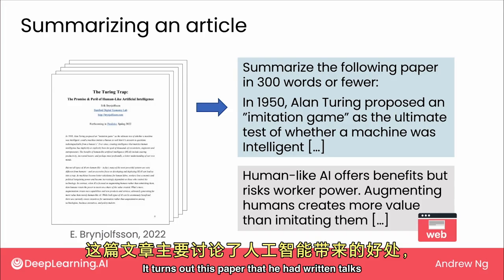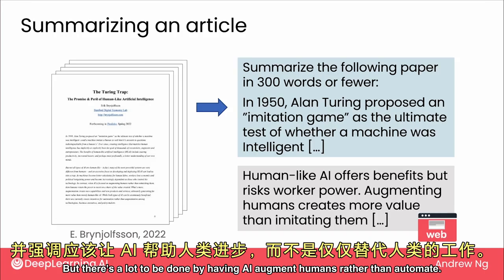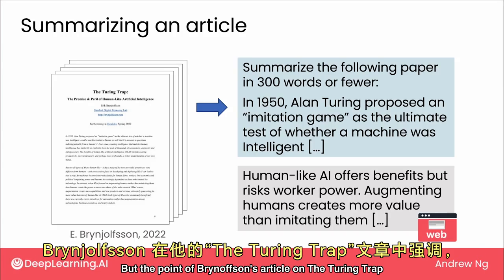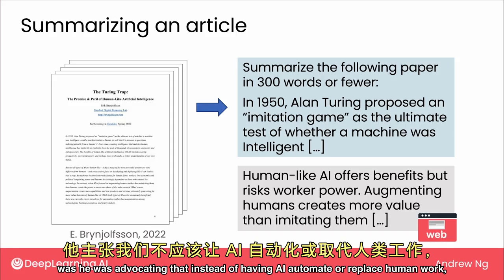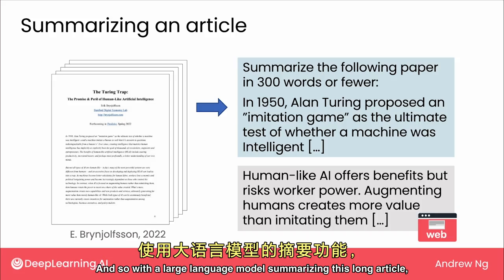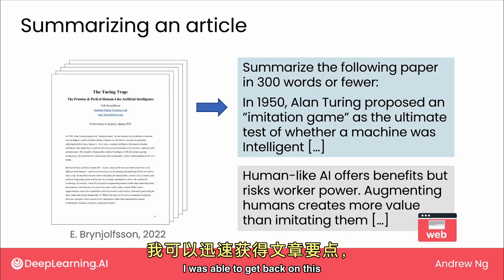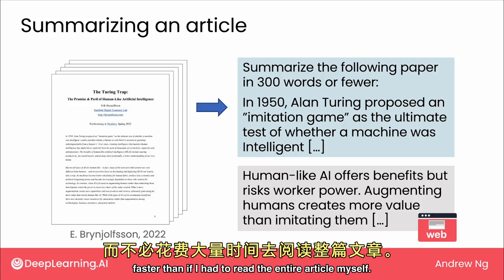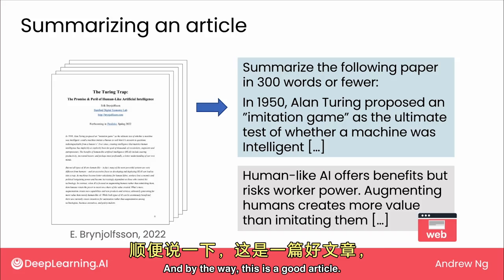It turns out the paper talks about how human-like AI offers benefits, but there's a lot to be gained by having AI augment humans rather than automate. Brynjolfsson's article on 'The Turing Trap' advocates that instead of having AI automate or replace human work, we should put more effort into having AI complement or augment human work. With a large language model summarizing this long article, I was able to get back to him faster than if I had read the entire article myself. And by the way, this is a good article — eventually I did read it in full and really enjoyed it.